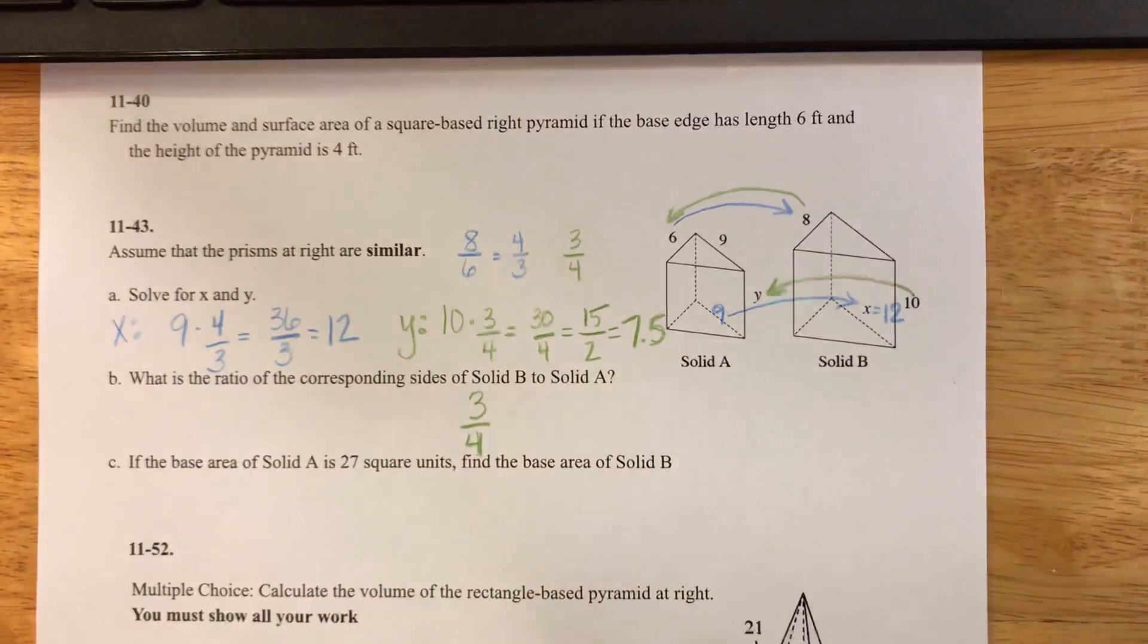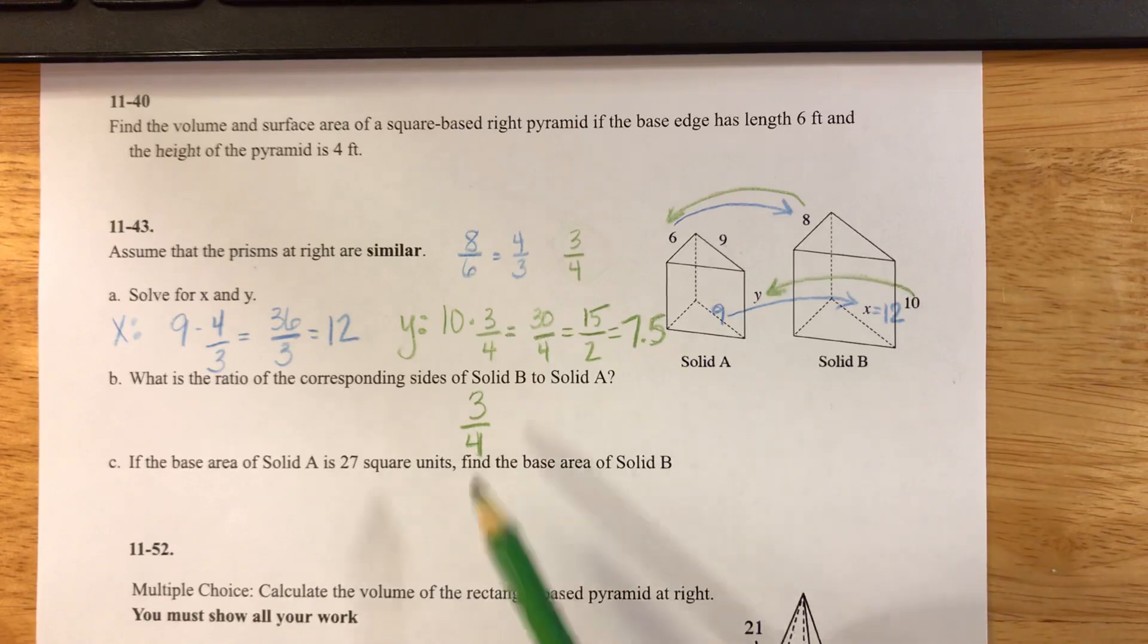If I was doing A to B, smaller to bigger, I would say 4 over 3. For this one, I don't really mind either way you have it written. If you said that the answer to this one was 4 over 3, I would also count that as being correct.